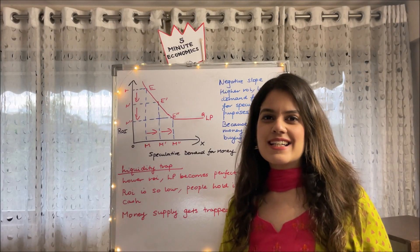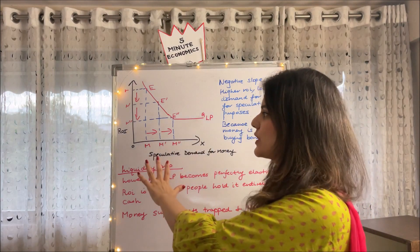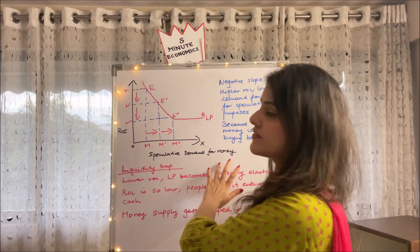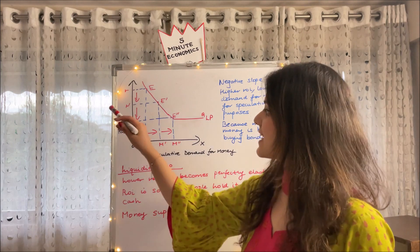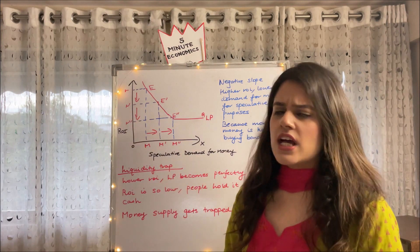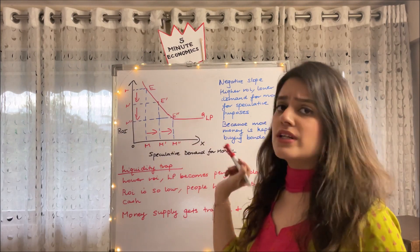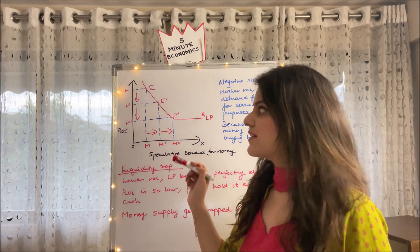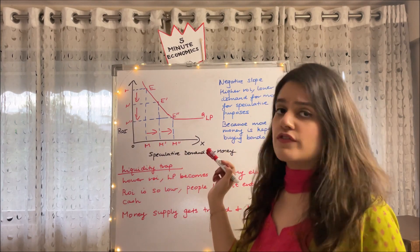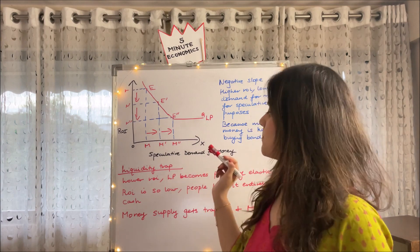So lastly guys I would draw your attention to this particular graph. On the x-axis I have taken speculative demand for money whereas on the y-axis I have taken rate of interest. The shape of this LP which is the liquidity preference curve clearly shows that there is an inverse relationship between rate of interest and our speculative demand for money.